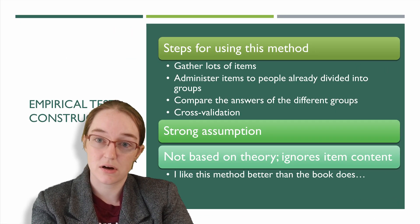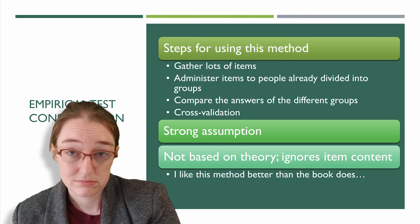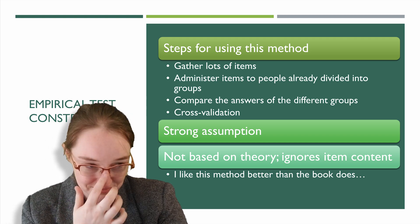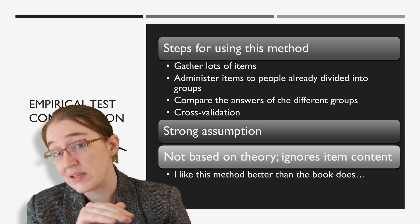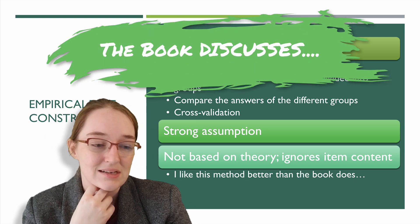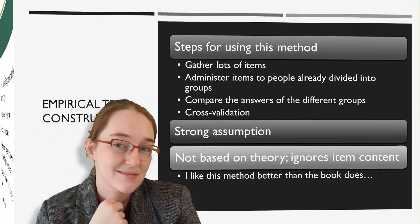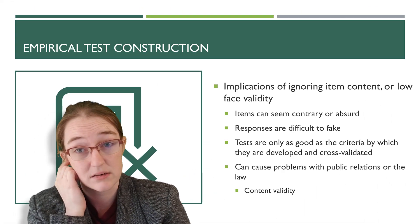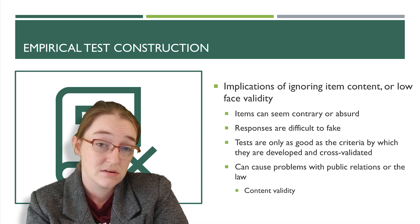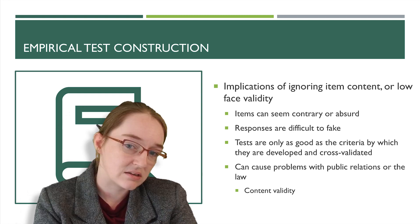There are strong assumptions you need to watch for when running this kind of test. Sure, those groups answered questions distinctively — but what is causing them to answer that way? It's not based on theory, and the book really criticizes this method. It ignores item content, which can lead to legal details. I like this method better than the book does — it's harder to fake, because the responses were never designed to match onto anything obvious.